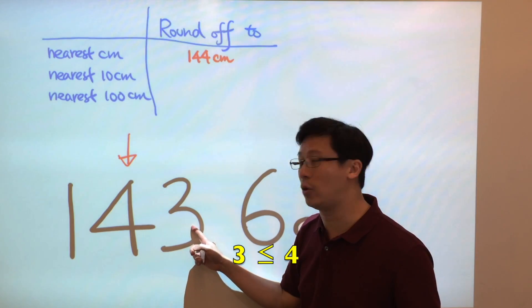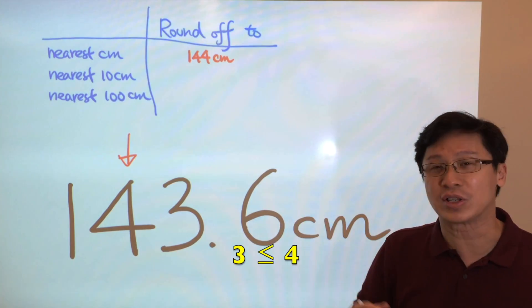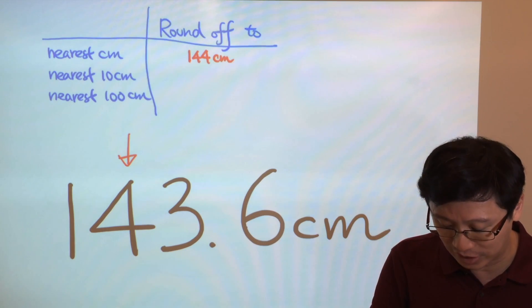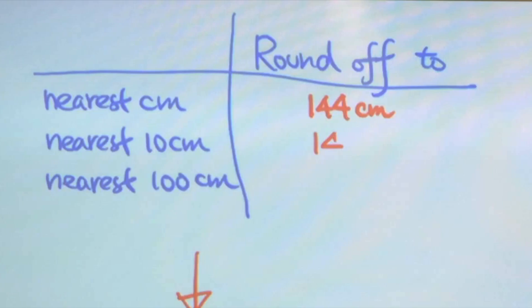3 is 4 or below. That means we just leave it. We don't need to consider 3 cm. Therefore the answer will be 140 cm.